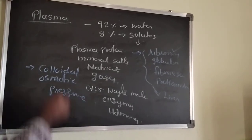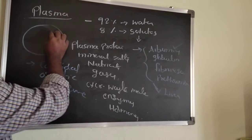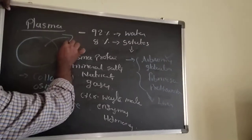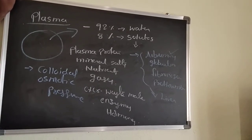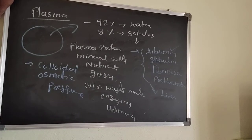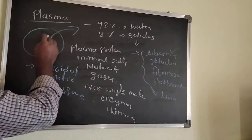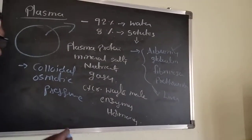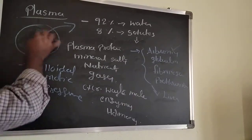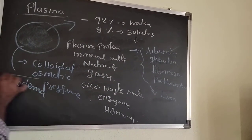Colloidal osmotic pressure means: when excess fluid is present in the cell, that excess fluid is eliminated from the cell or from the body by the presence of albumin. If albumin level decreases in our body, excess fluid is not eliminated and instead accumulates, leading to a swelling appearance called edema.